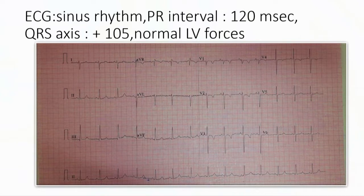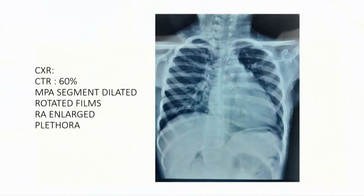The QRS axis was plus 105 with normal LV forces. The chest X-ray is a bit rotated; it had a CT ratio of 60% with MPA segment dilatation and RA enlargement. There is pulmonary plethora.